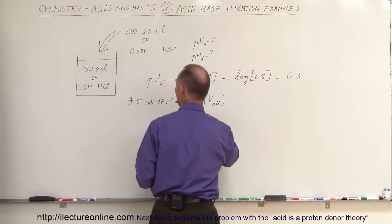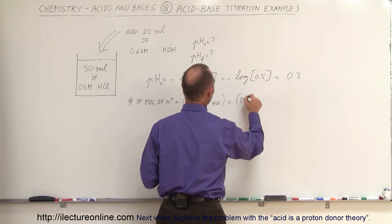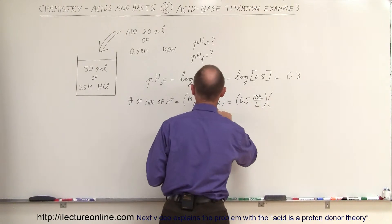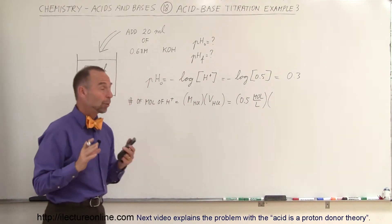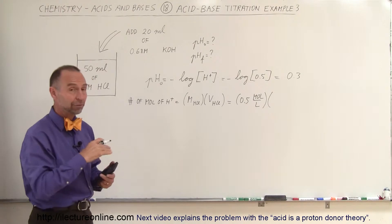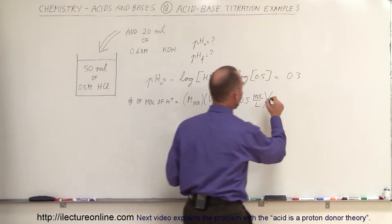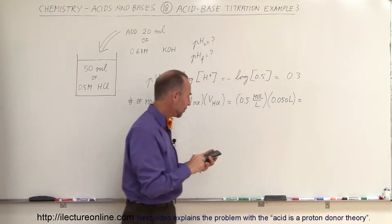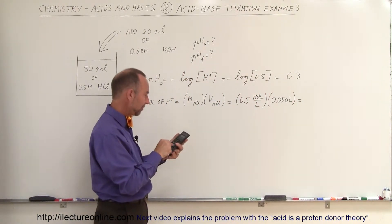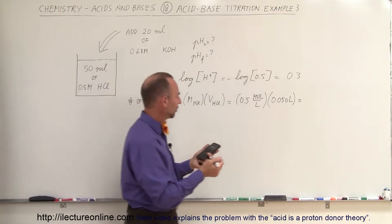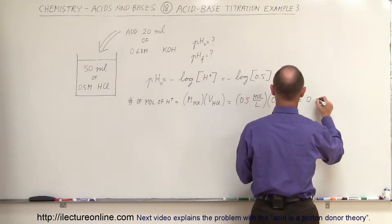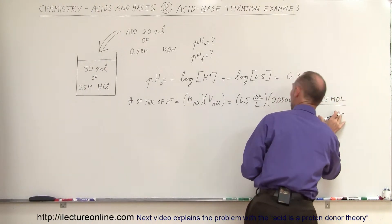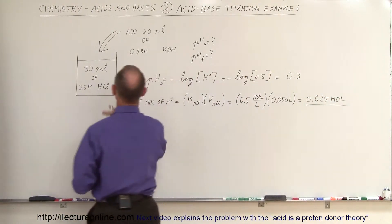The molarity of the hydrochloric acid is 0.5 moles per liter, multiplied by the volume of 50 milliliters, which we convert to 0.050 liters. So 0.5 times 0.050 gives us 0.025 moles of hydrogen ions in the original solution.